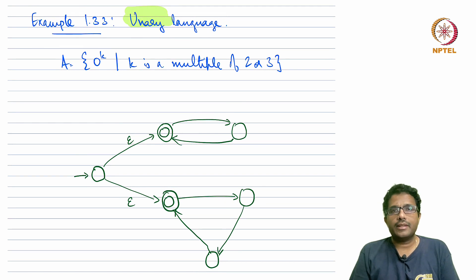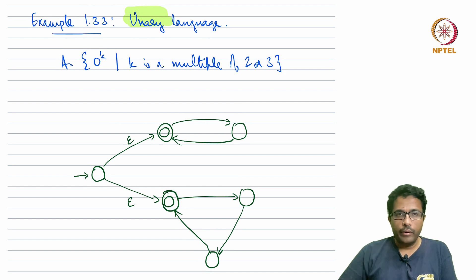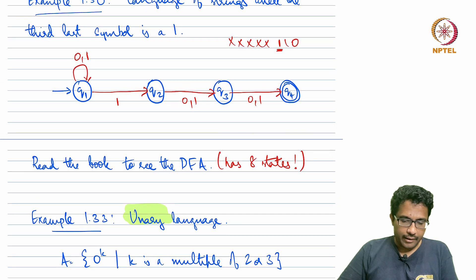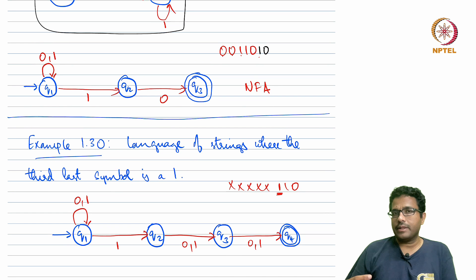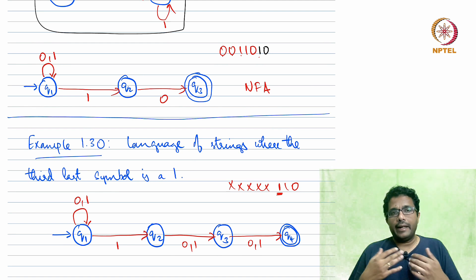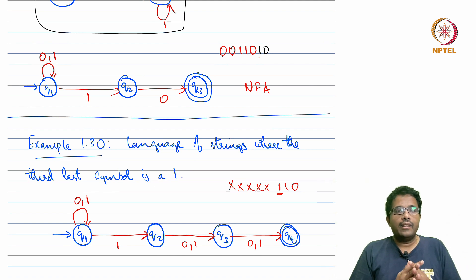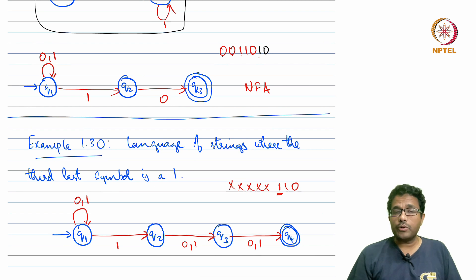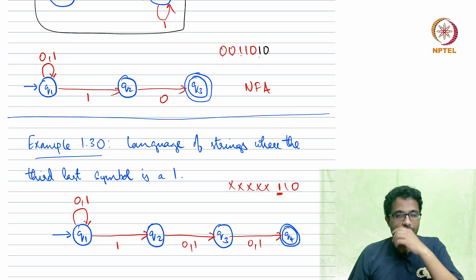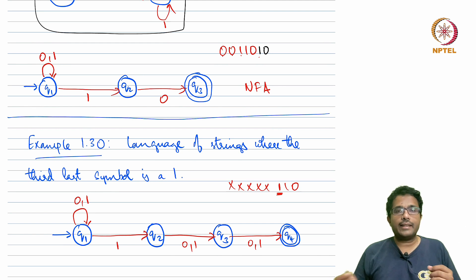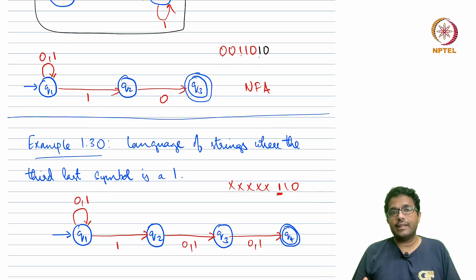Hello and welcome to lecture 7 of the course Theory of Computation. In lecture 6 we saw non-deterministic finite automata, which are NFAs. We did not formally define it but we saw examples and tried to understand it through them. It was the same as DFAs but with added flexibilities: multiple outgoing arrows for the same symbol, epsilon transitions, and you accept a string if there is at least one valid accepting computation.